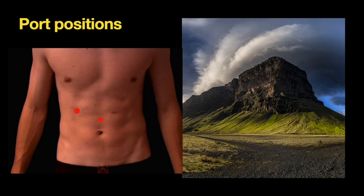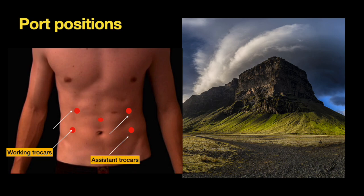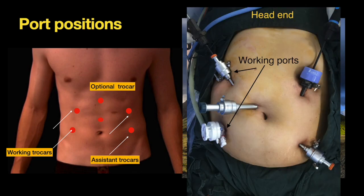The optic port is supra-umbilical and slightly to the left. The surgeon stands on the right side of the patient; the working trocars in the right iliac fossa and right flank are shown. The left side trocars are in mirror image and those are the assistant trocars. An epigastric trocar midway between the xiphoid and umbilicus is optional. A representative actual operative image without the optical trocar is shown; however, this is not the same patient. Let us take a look at the video now.